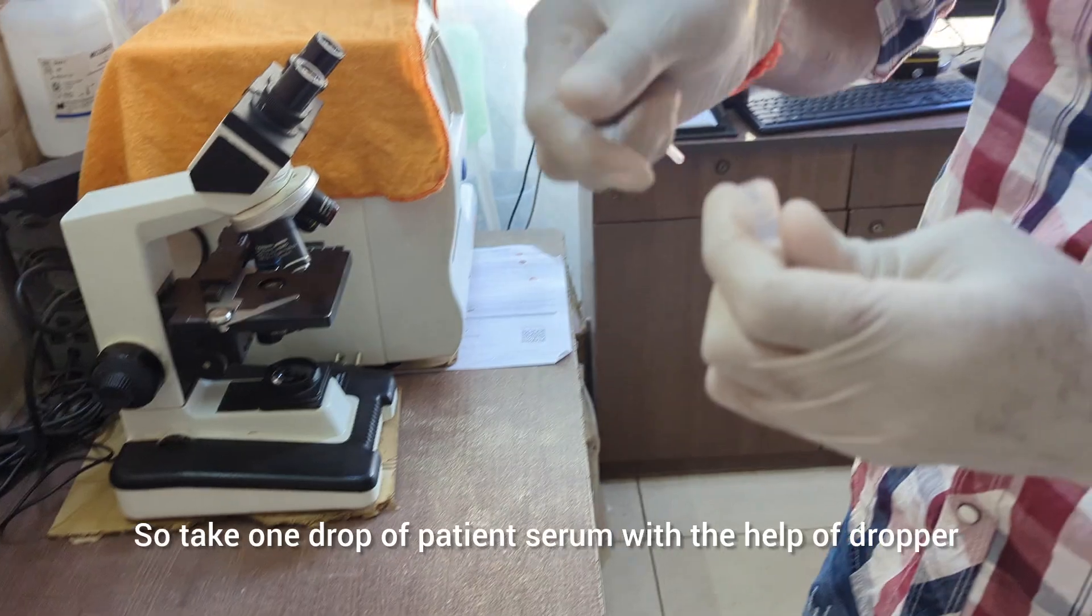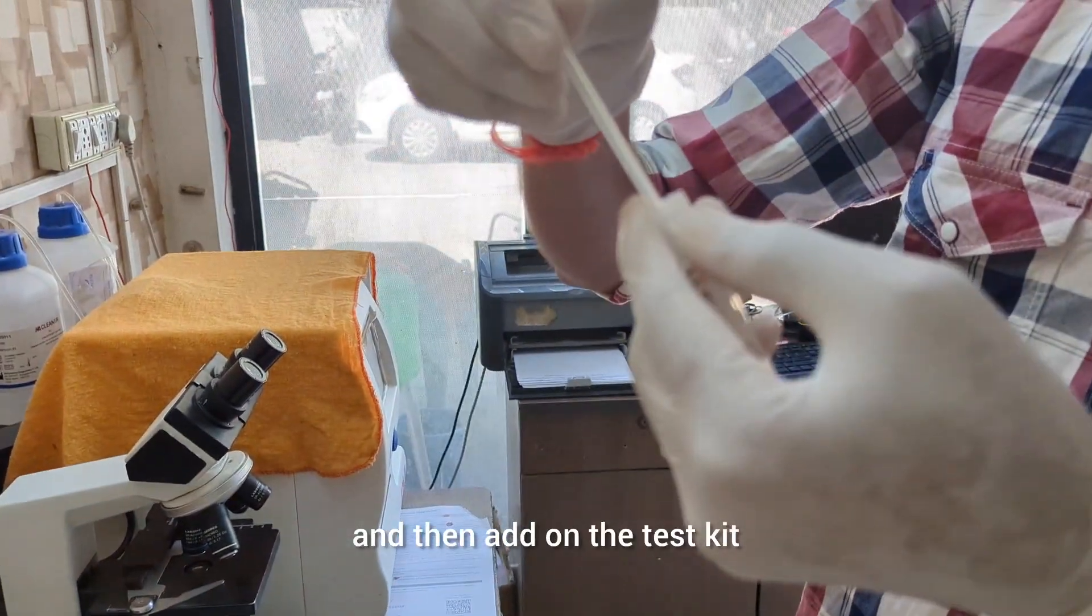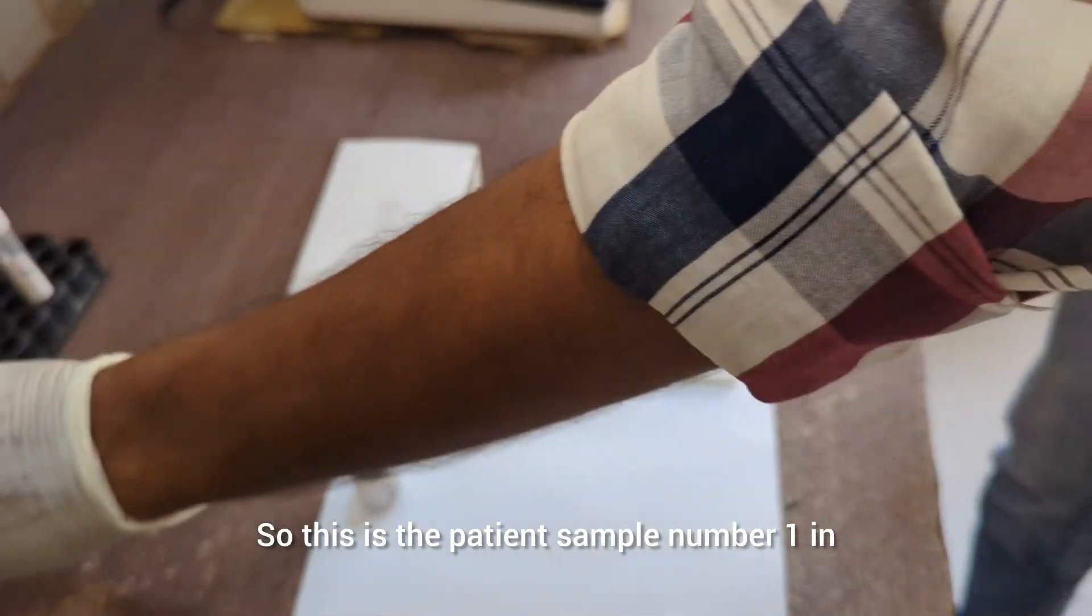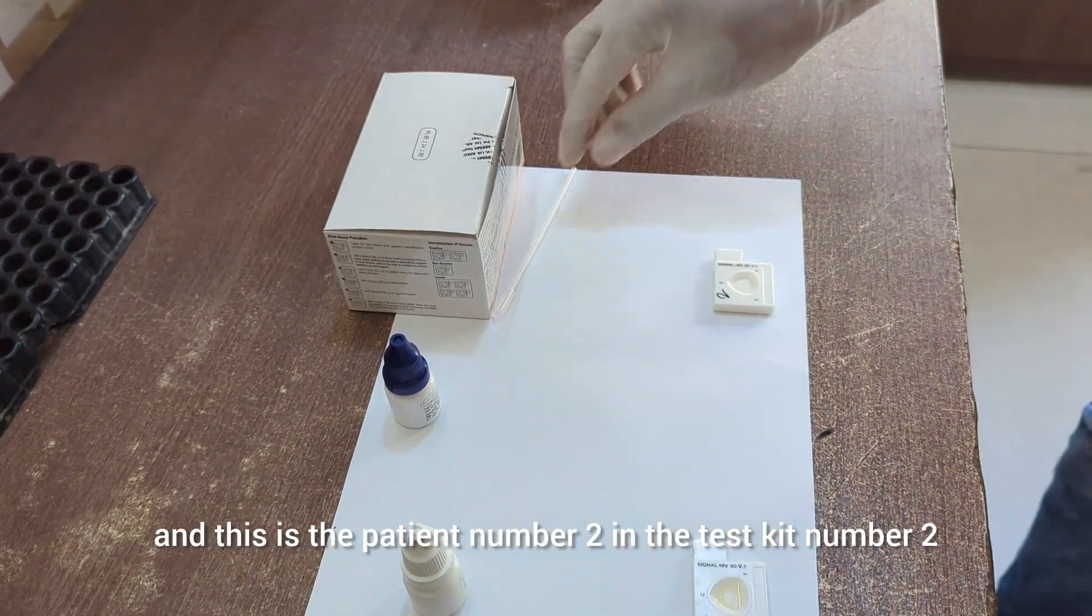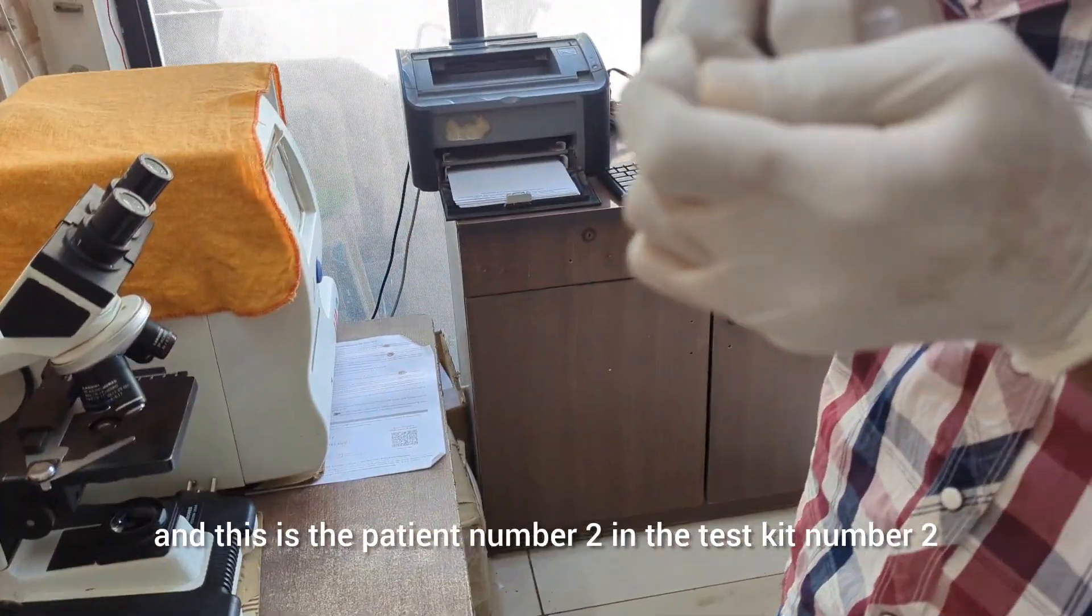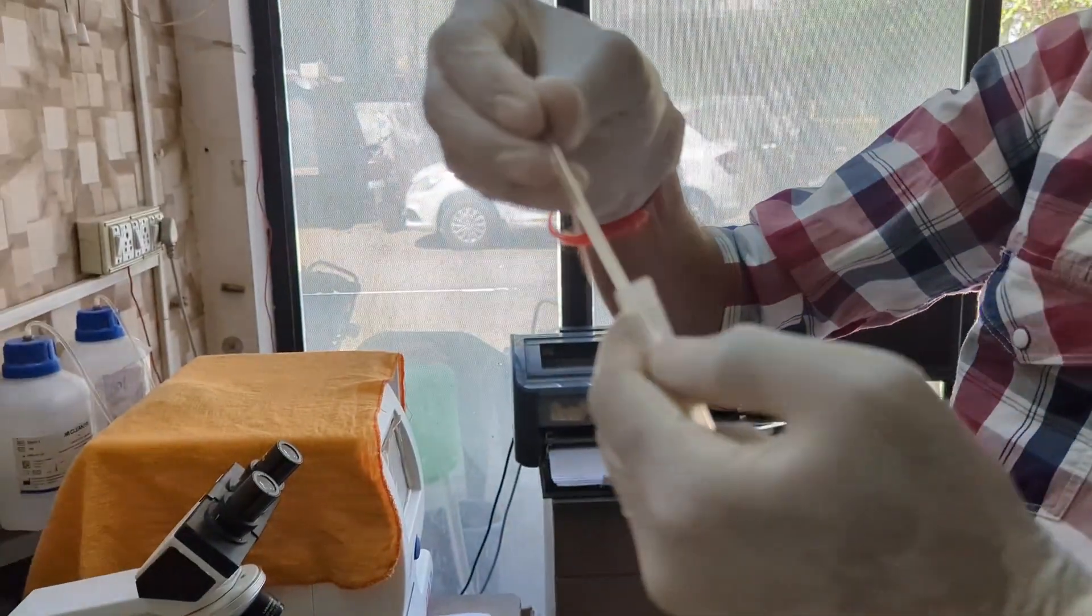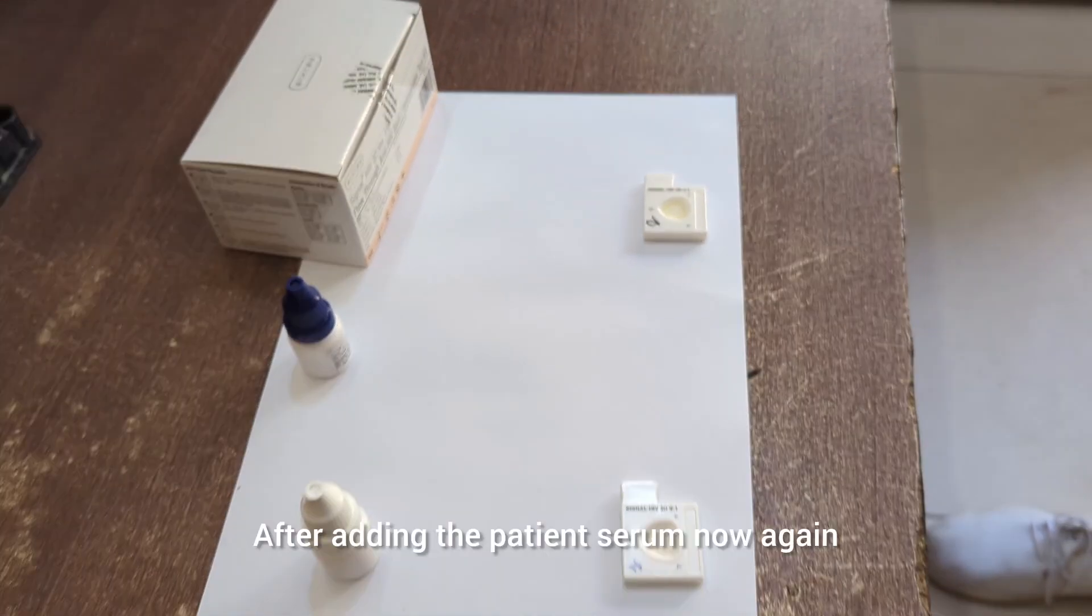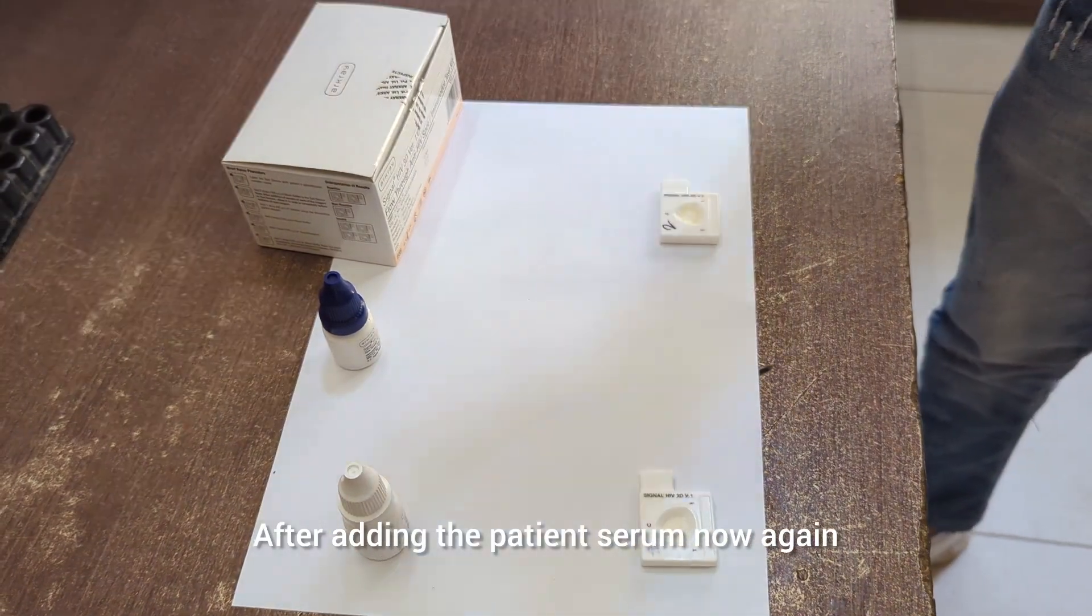After adding the wash buffer, you have to add patient serum. Take one drop of patient serum with the help of a dropper and then add it on the test kit. This is patient sample number one in test kit number one, and this is patient number two in test kit number two.